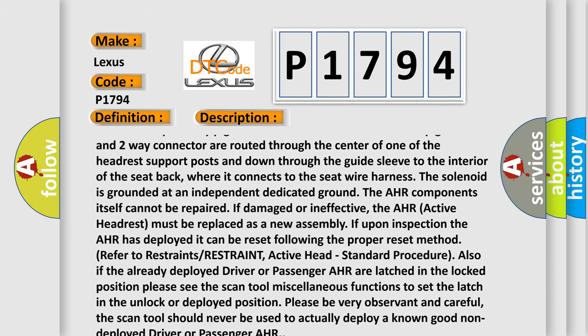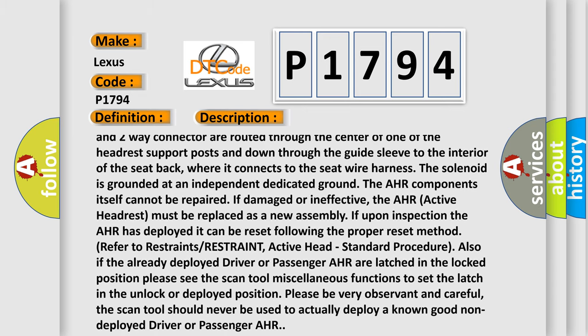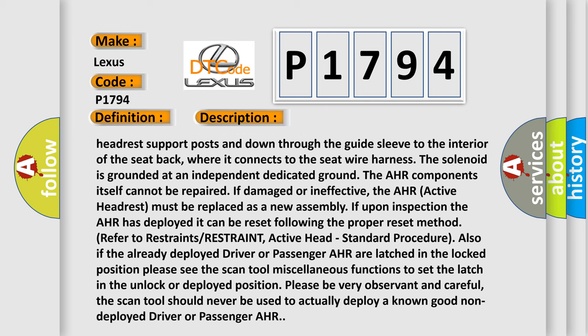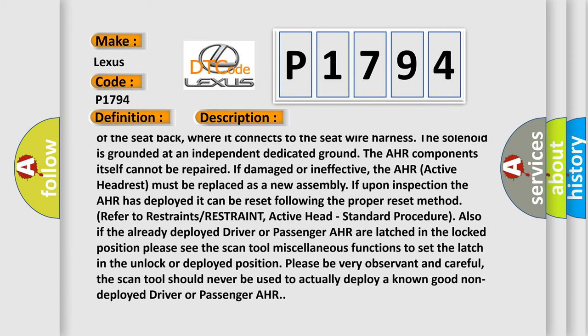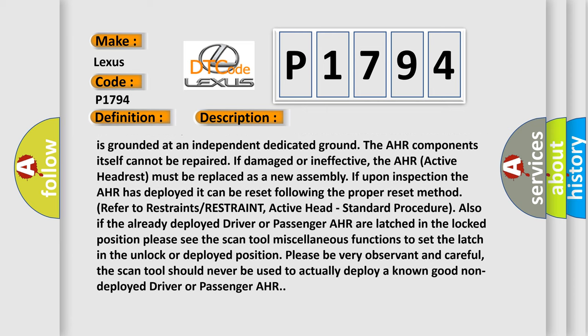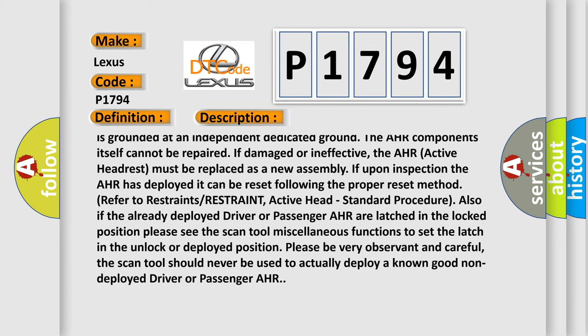The solenoid is grounded at an independent dedicated ground. The AHR components itself cannot be repaired if damaged or ineffective. The AHR active headrest must be replaced as a new assembly. If upon inspection the AHR has deployed, it can be reset.